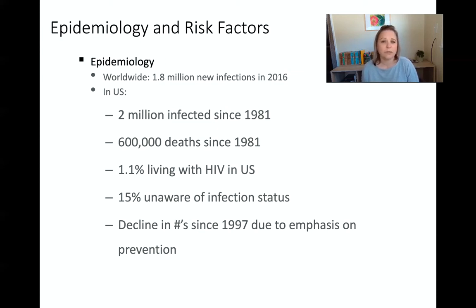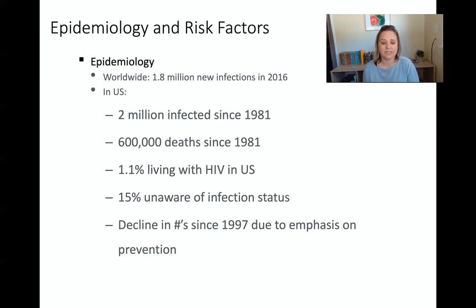Here in the United States, it is still a very real issue. Two million people have been infected since 1981 when the AIDS epidemic first came to the US, and about 1% of our population lives with HIV currently. 15% of those are unaware they have the disease, which is why testing for high-risk patients is so important. Because of public health focus on disease prevention, we have seen a decline in the numbers since the late 90s.